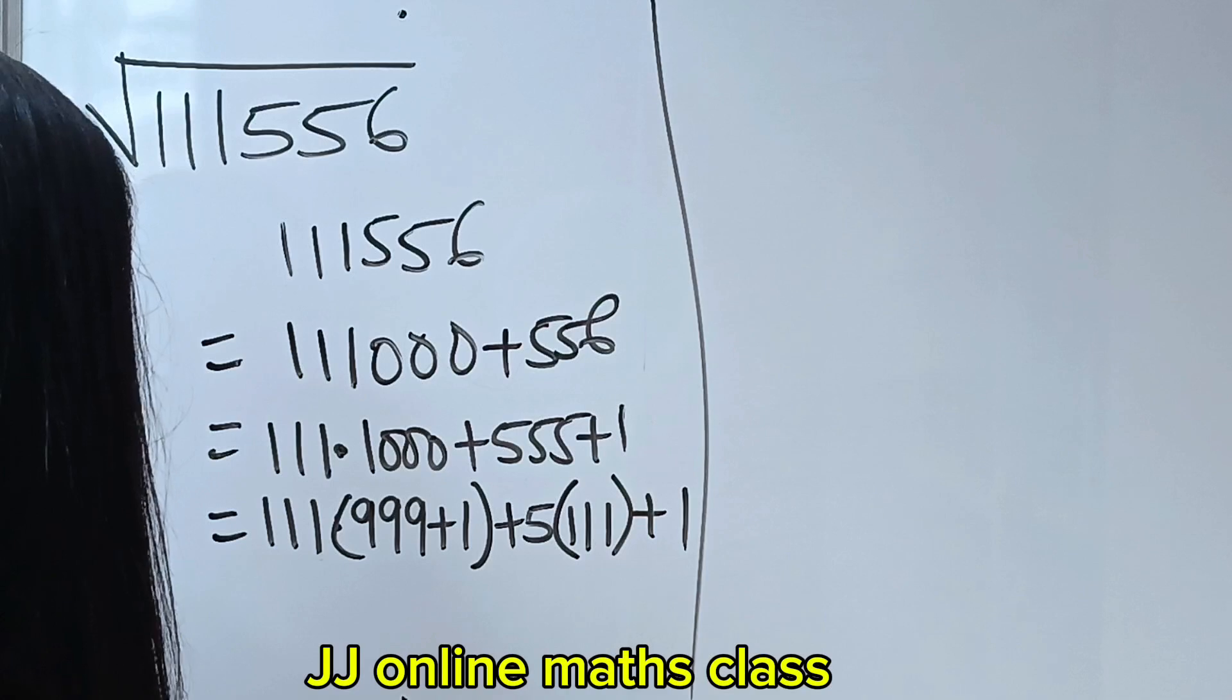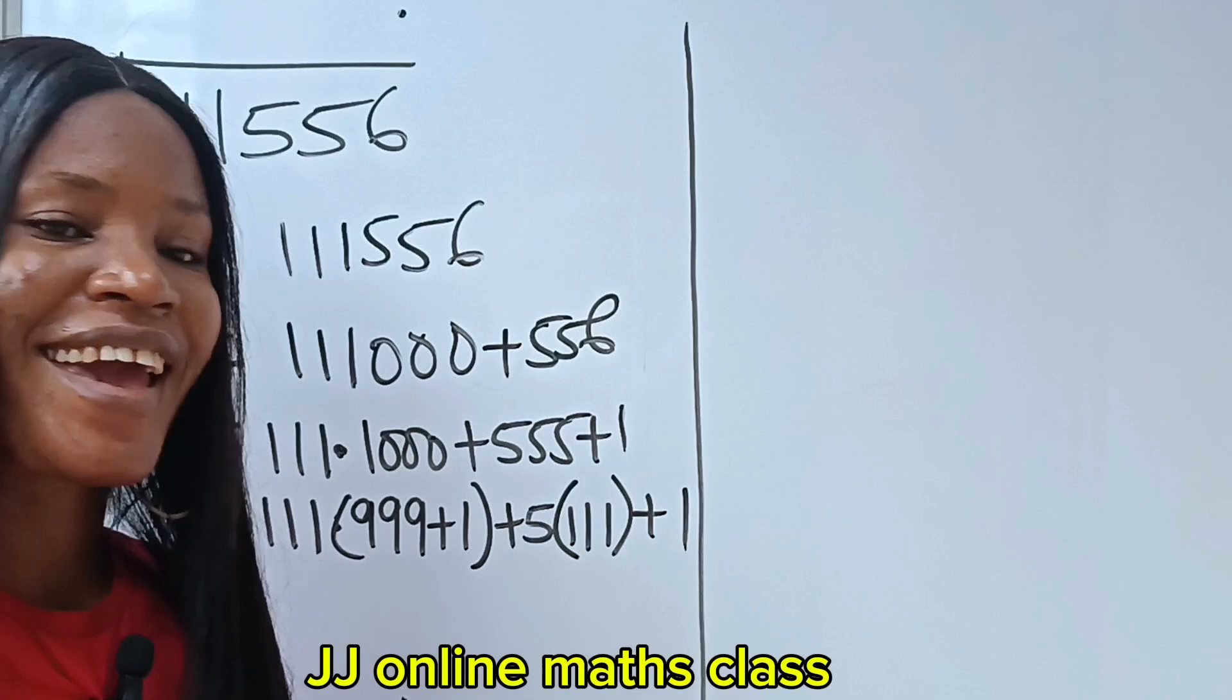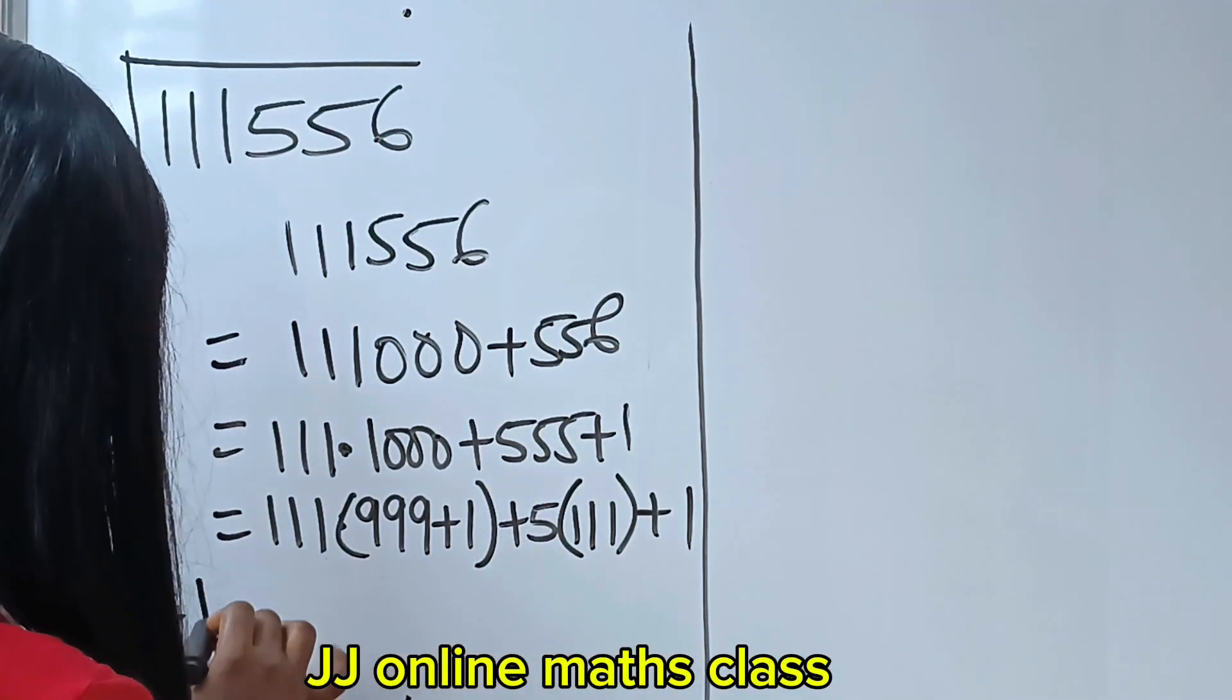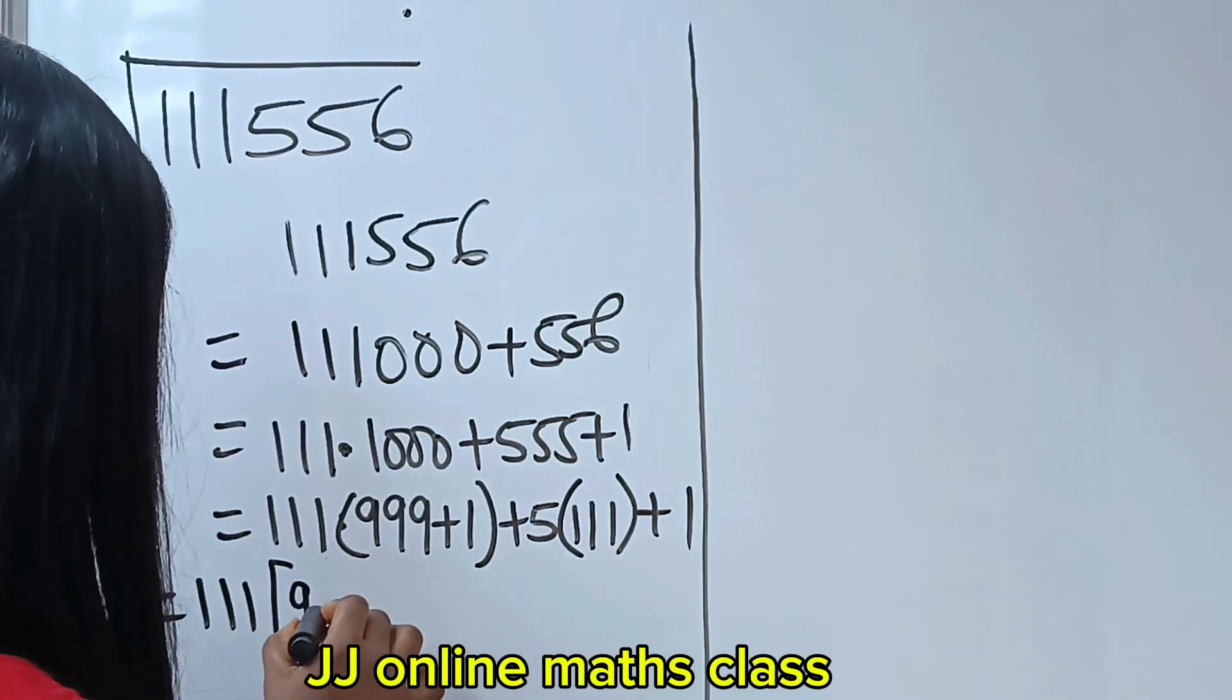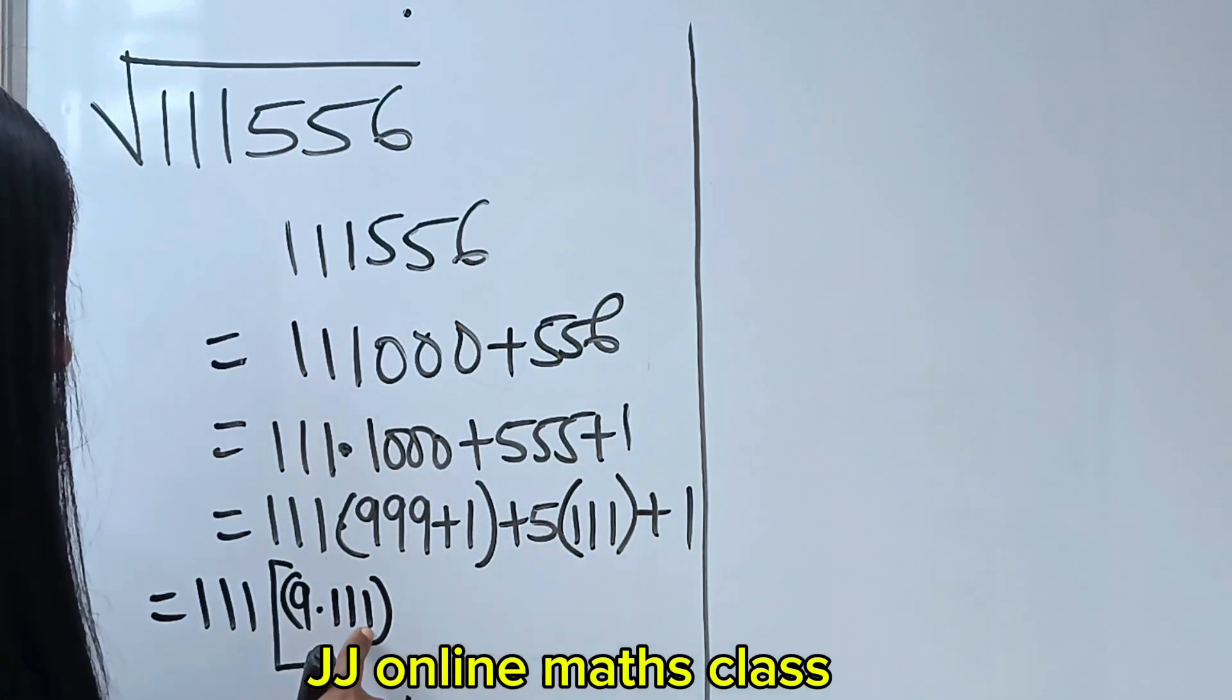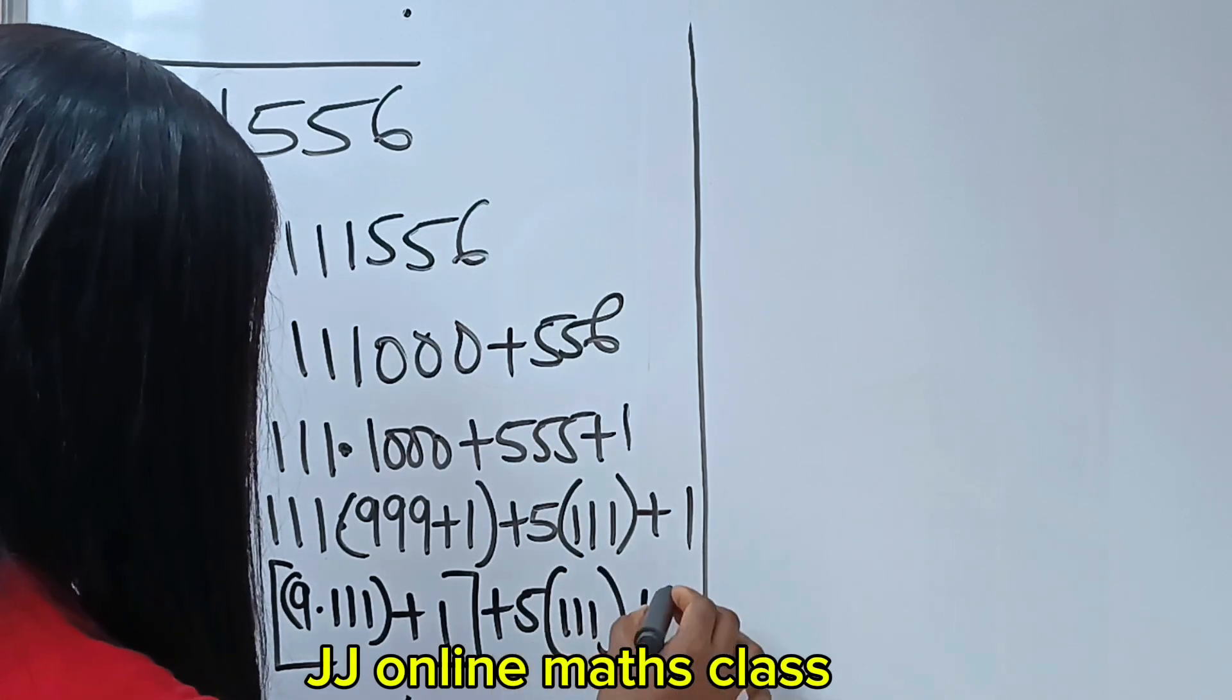Now, will you just continue? This is the same thing as what? 111 multiplied by 999 is the same thing as 9 multiplied by 111, right? 9 multiplied by 111 plus 1.